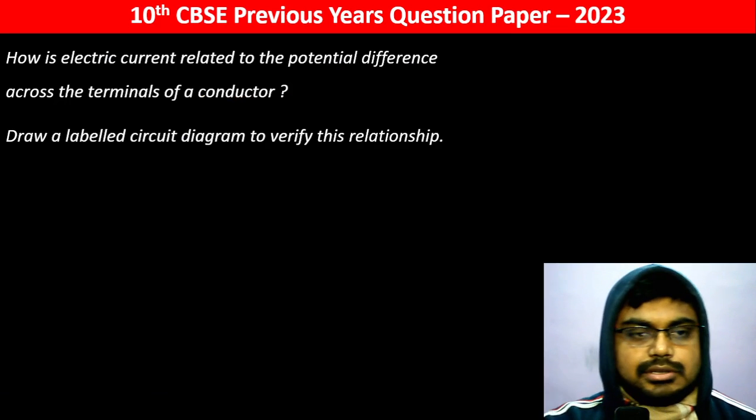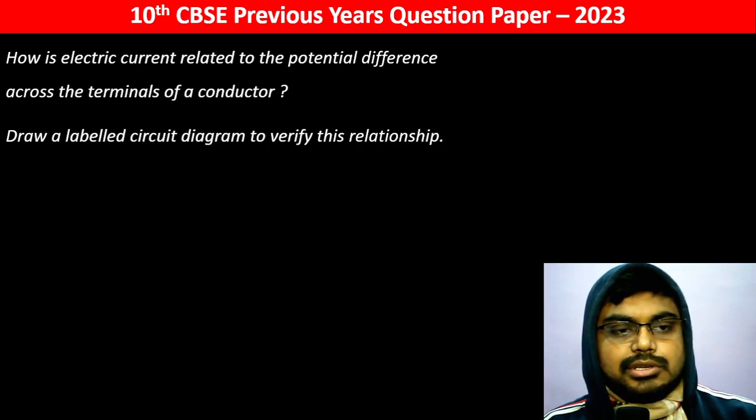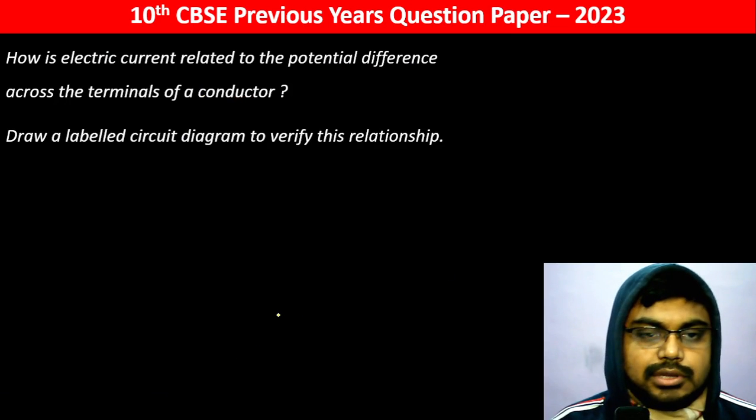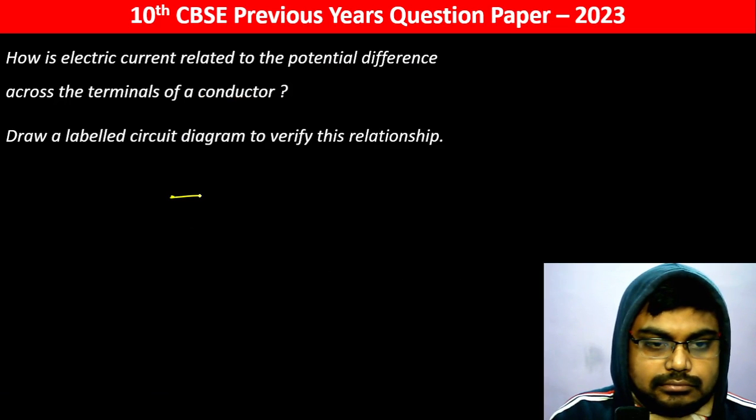How is electric current related to the potential difference across the conductor? What is the term of the conductor?